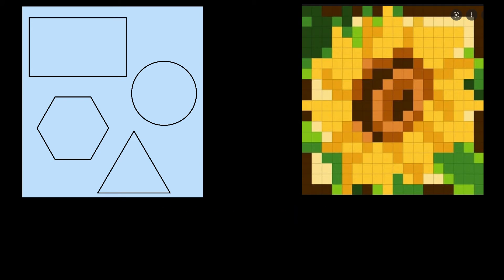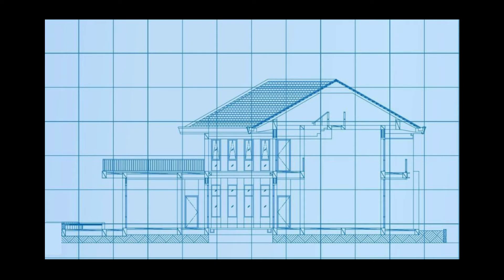A graphic file can be one of two types: a vector file or a raster file. A vector graphic is defined by mathematical formulas that create paths to represent shapes, such as a rectangle, a triangle, etc. Typically, vector images are best used for design and illustration work, such as computer-assisted design, better known as CAD.